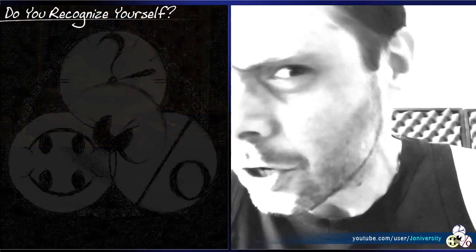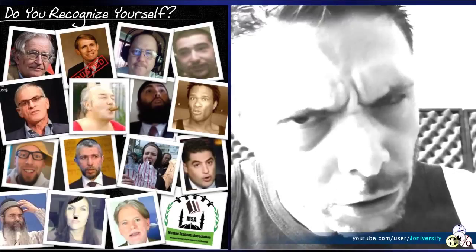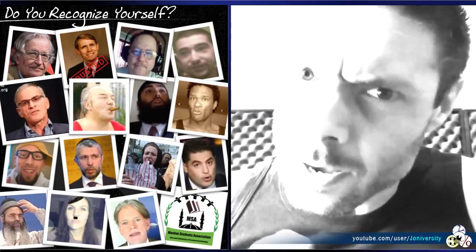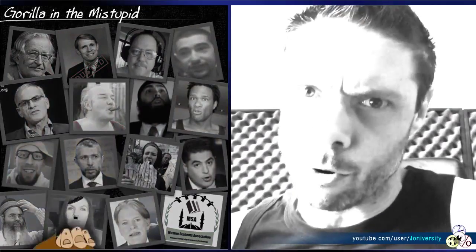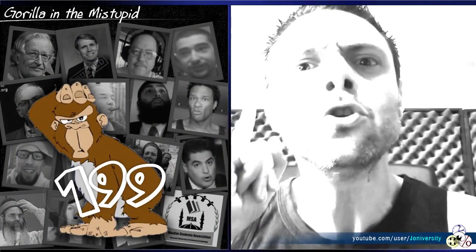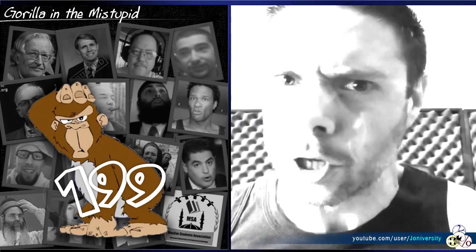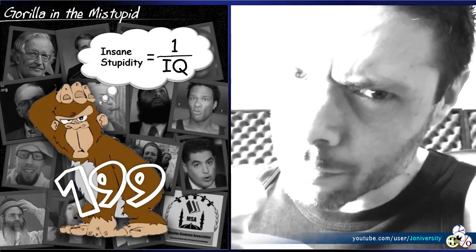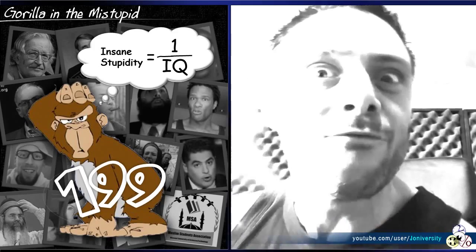Well, ladies and gentlemen, in my continuing mission to expose assholes worldwide and teach you physics by demonstrating it on stupid people, today's subject is Gorilla 199, the living proof of the neurological singularity. When IQ goes to zero, insane stupidity goes to infinity.